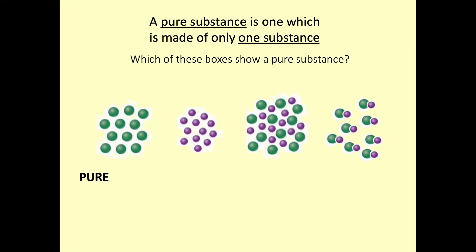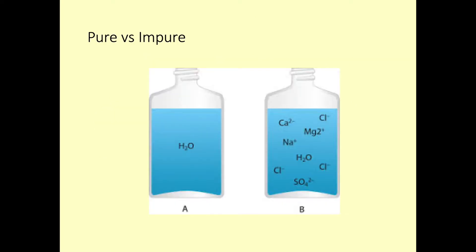The first image is pure because there are only green circles present, and similarly the second is also pure because there are only purple circles present. Our third image shows a mixture of green and purple circles and is therefore impure because there are multiple types of substances present. The final image is actually pure because there is one type of substance present — it has been made by joining green and purple circles together to make a new substance, and only that type of new substance is present.